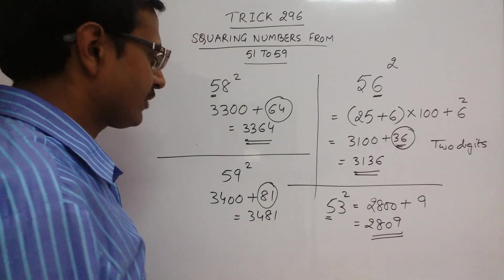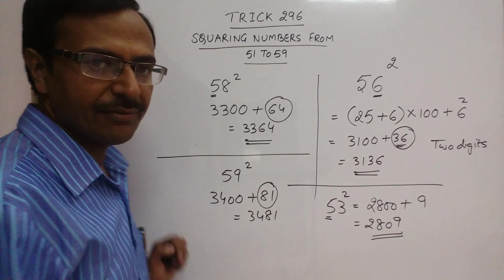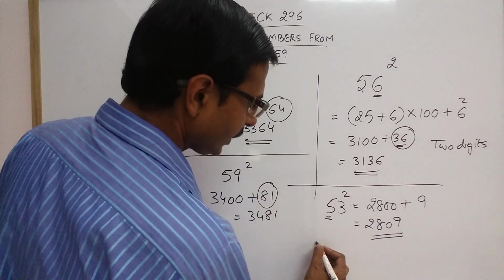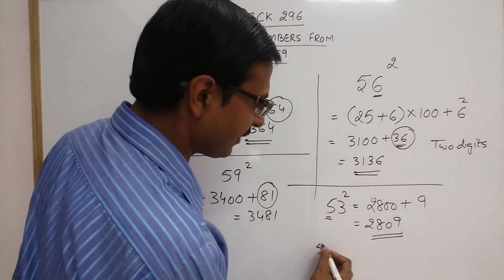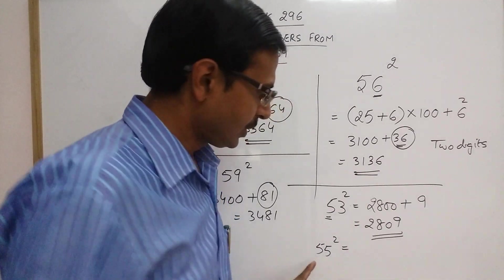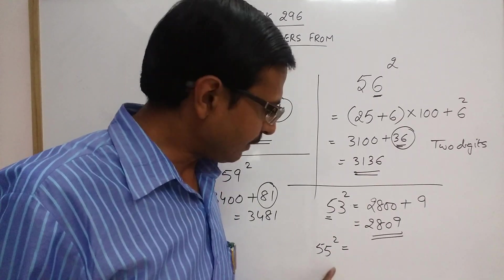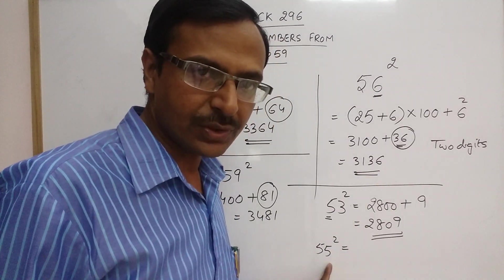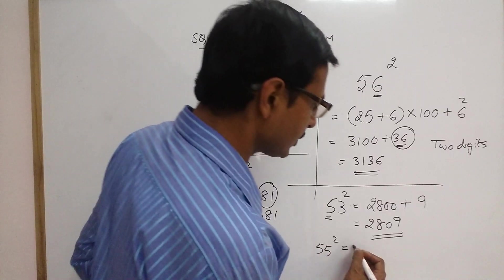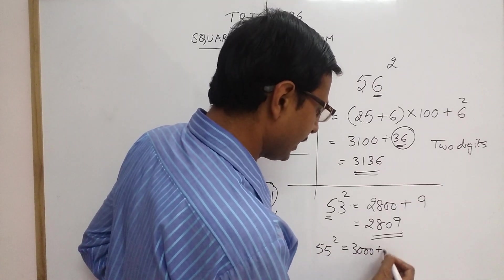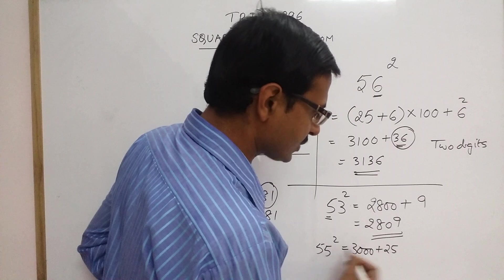Likewise, if you want to take one more example, we can have 55. We can do it in a single step. 55 square: 5 square is 25, 25 plus 5 is 30. So 30 followed by 2 zeros, 3000. And 5 square is 25.